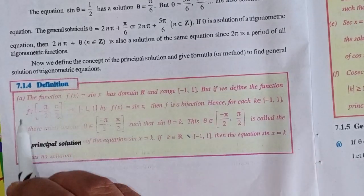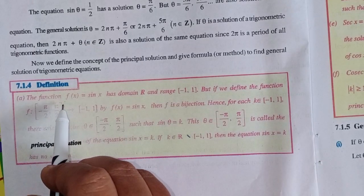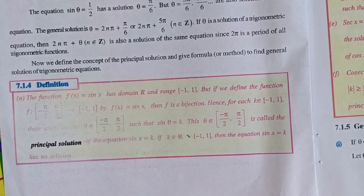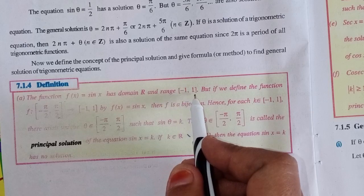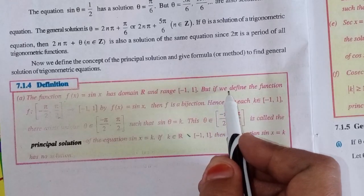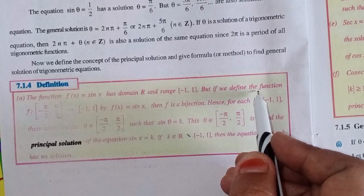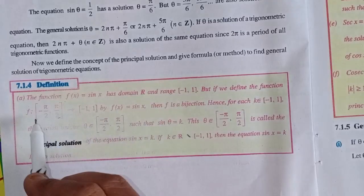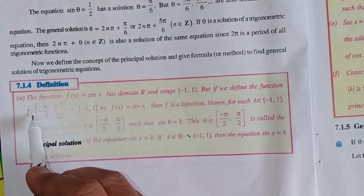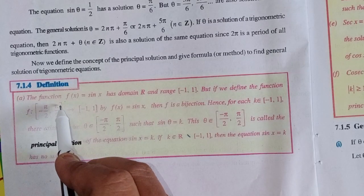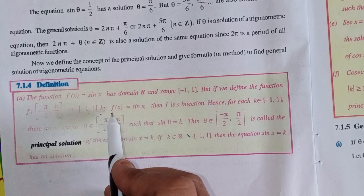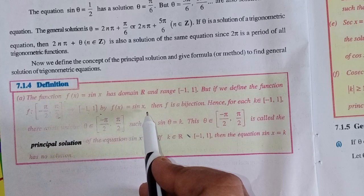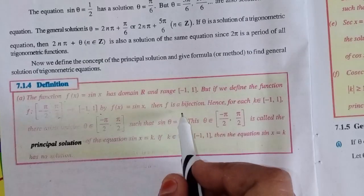Next, the definition of principal solution. The function f(x) = sin x has domain ℝ and range [−1, 1]. But if we define the function f as a mapping from [−π/2, π/2] to [−1, 1] by f(x) = sin x, then f is a bijection.